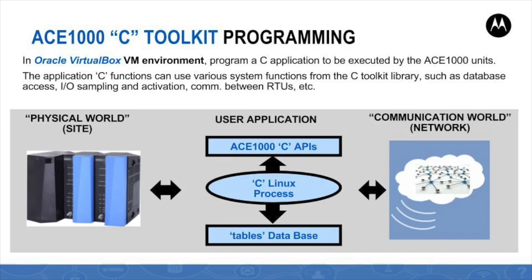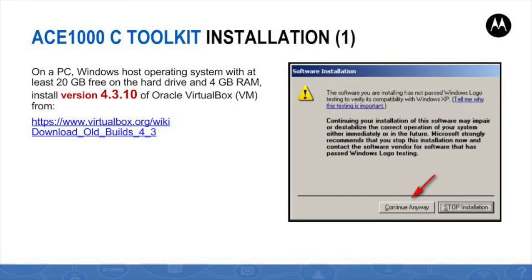The ACE1000 C toolkit programming environment is based on Oracle VirtualBox virtual machine environment. A C application is coded, compiled, and linked in this environment, and then installed in the ACE1000 unit for execution as a standalone Linux process. Available to the programmer is the C toolkit APIs library that provides an extensive set of APIs such as read and write to and from the unit's database, physical IO values monitoring and manipulations, communication between MOSCAD and ACE RTUs in the overall communication network, communication with other user devices, and other system operations.